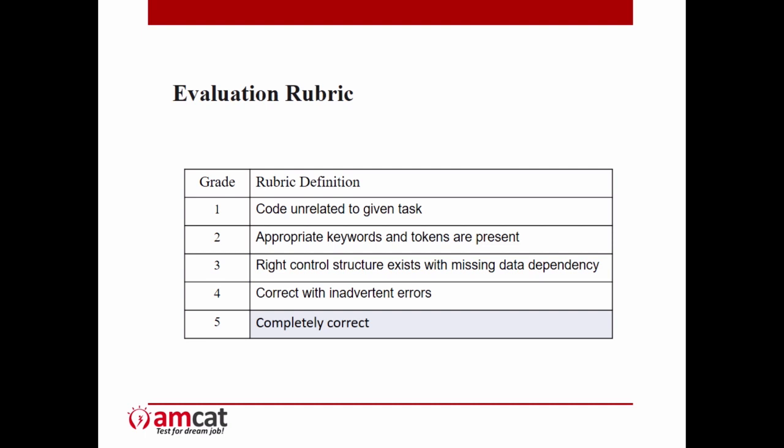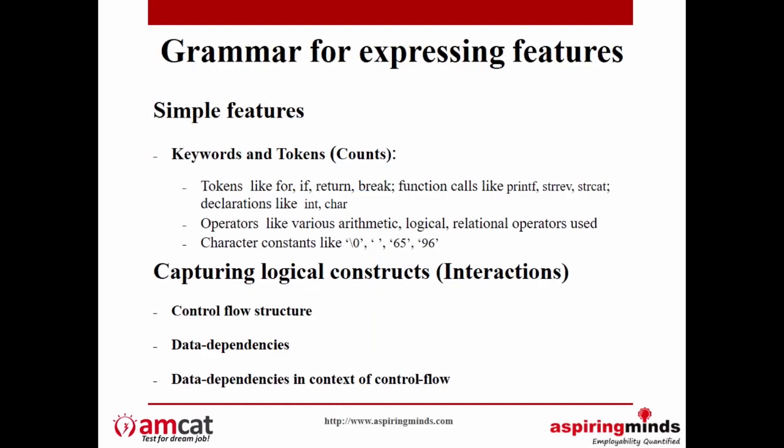The major contribution in this work was designing the features. When you compare programs with natural language, what makes the problem simpler is that programs have a strongly typed grammar — you can parse, create trees, create control flow structures and data dependencies, which you can't easily do with natural language. What makes it harder is that in natural language even bag-of-words works well because a word with its context gives a good idea of meaning. But in programs, whether a print statement is within a for loop or a for within a for is very important.